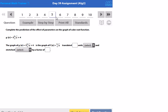Here's some examples from the Day 39 assignment. Here we're working with cube root functions. So here they want us to complete the prediction of the effect of the parameters on the graph of the cube root function. So they just want to know what's going to happen with transformations. That's going to be by identifying A, B, H, and K.